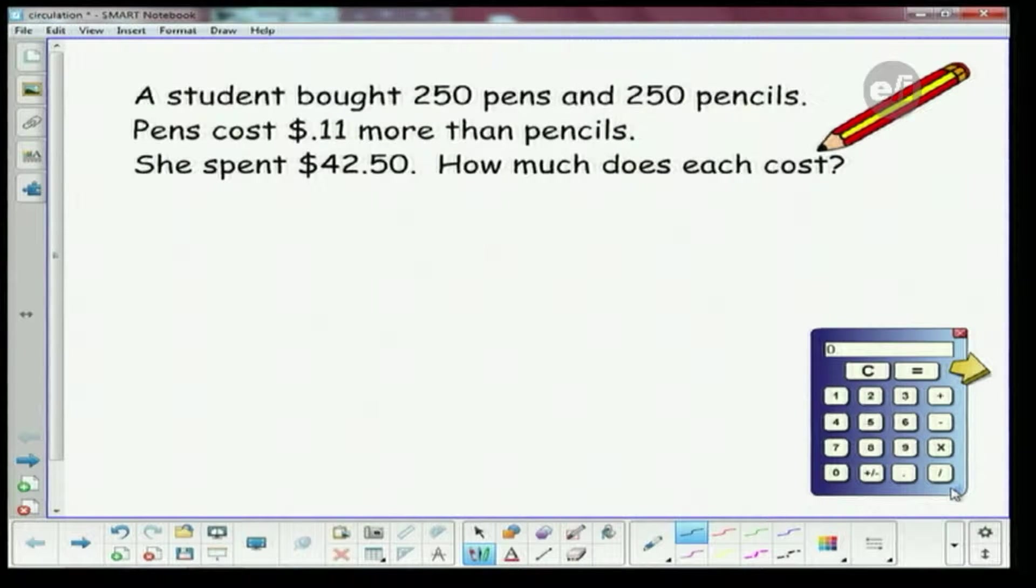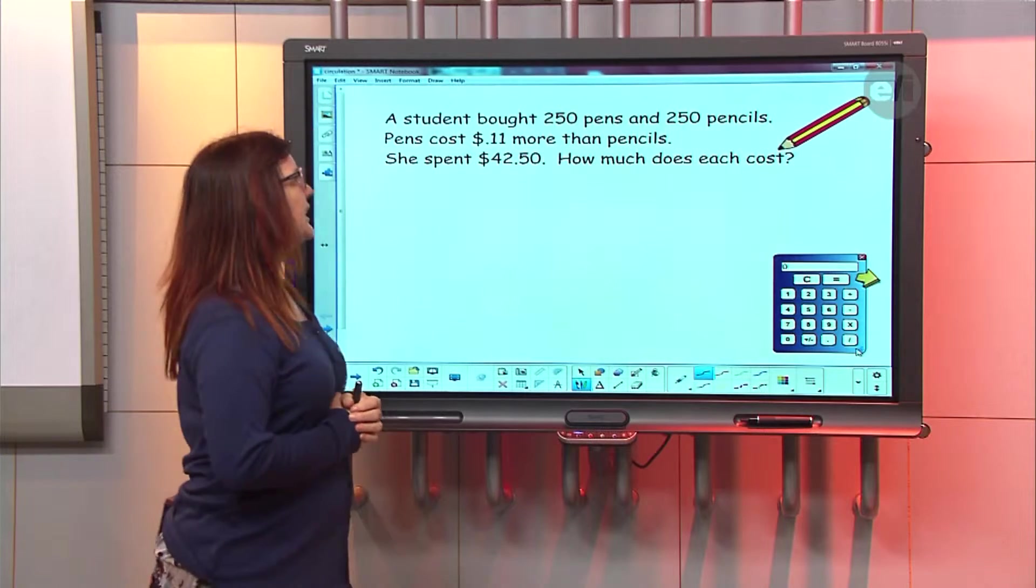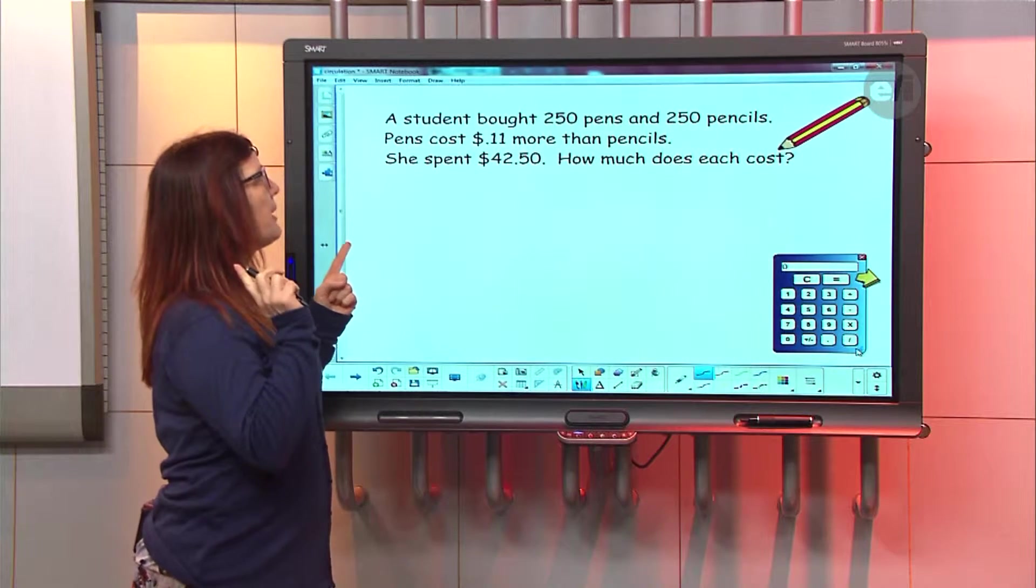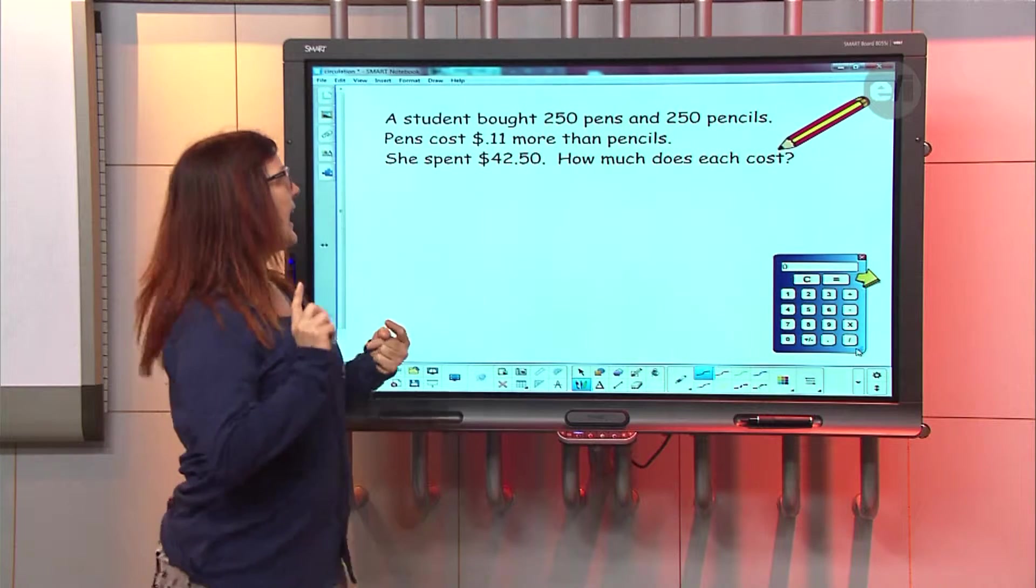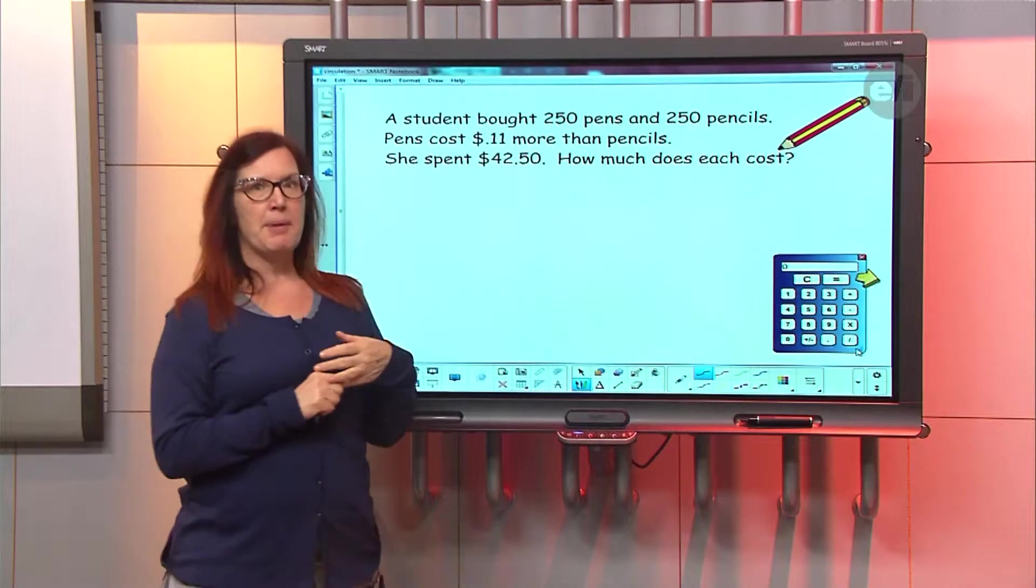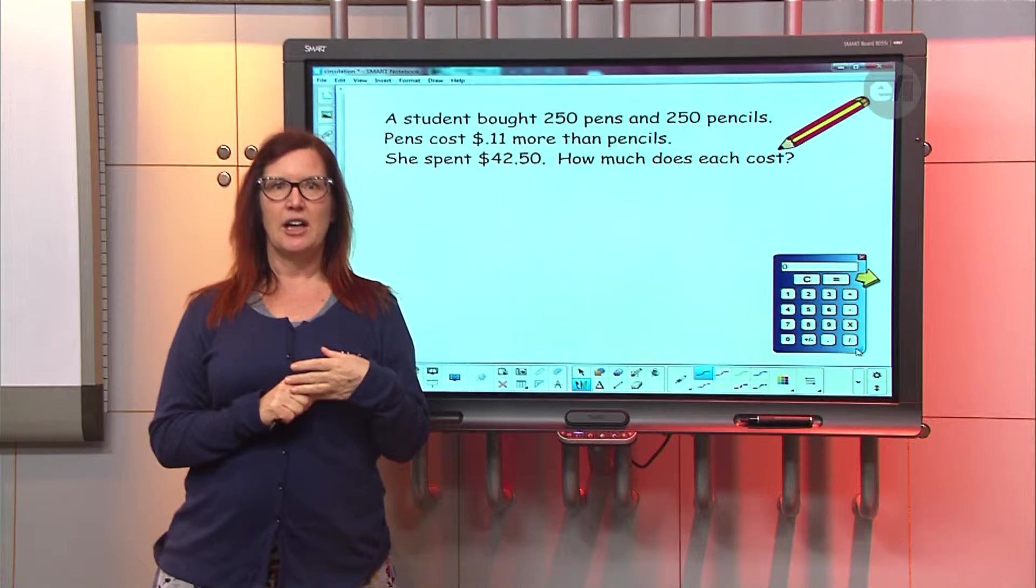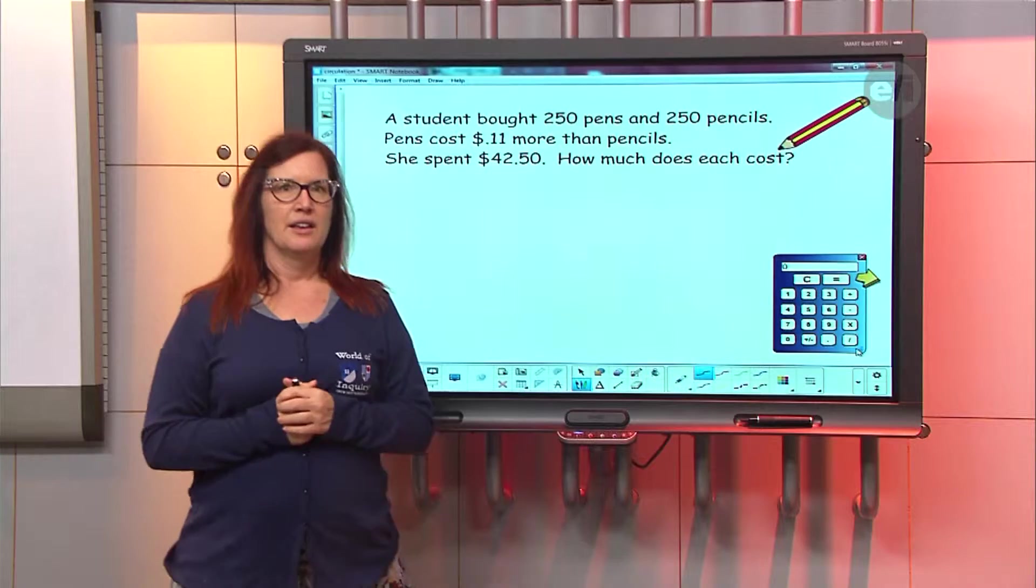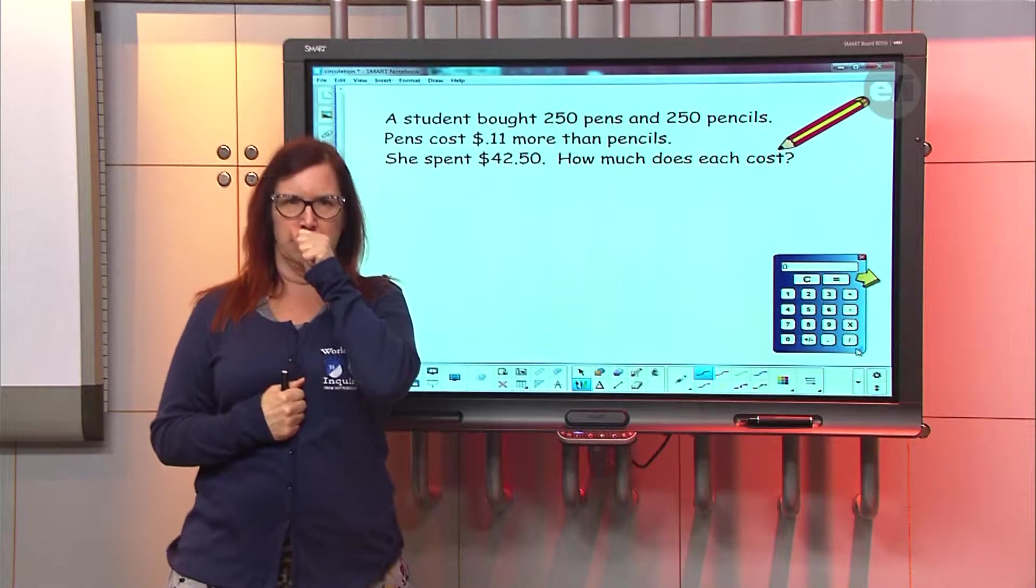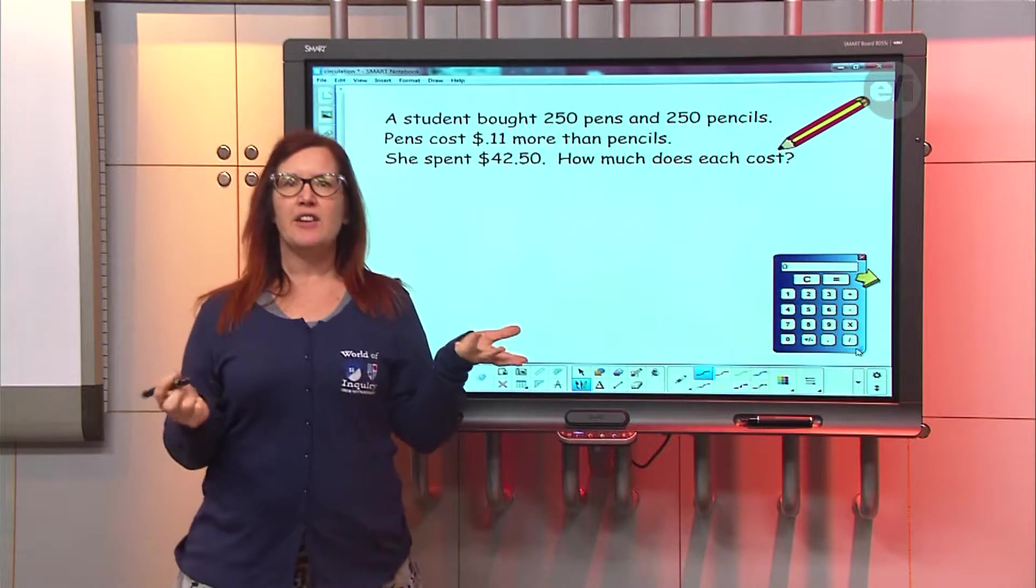Okay, so I kind of shortened that down to the board here. I just want to make sure it's right. So she bought 250 pens and 250 pencils, and the pens cost more than the pencils. Okay great, and she spent $42.50 altogether, right?